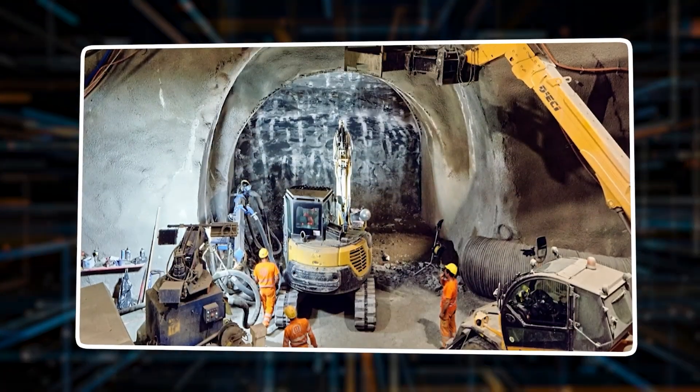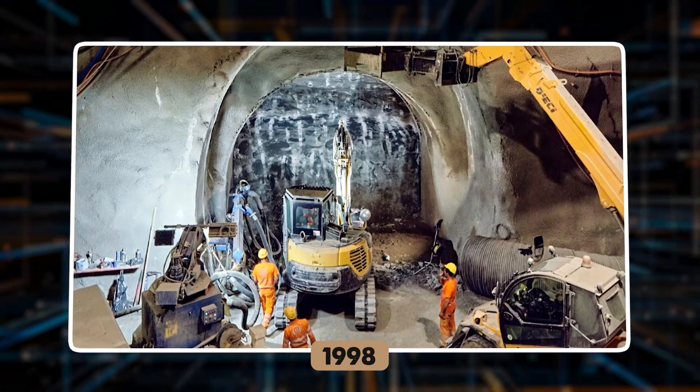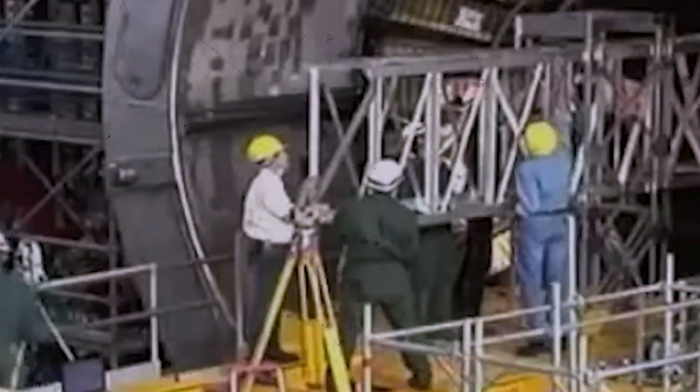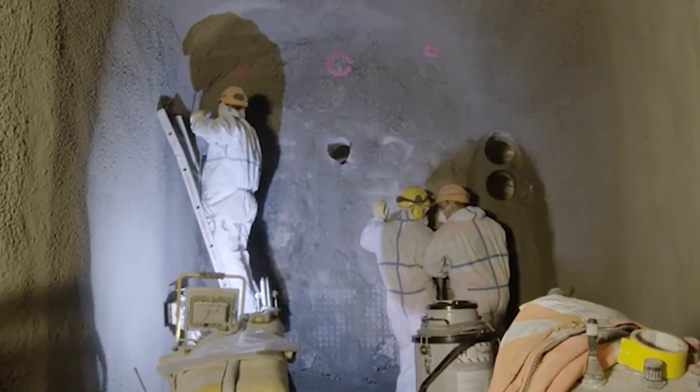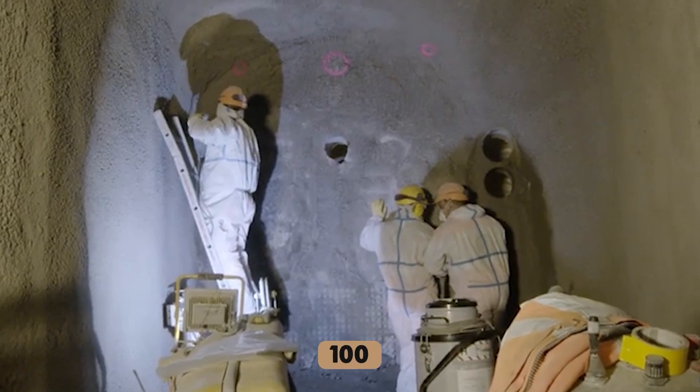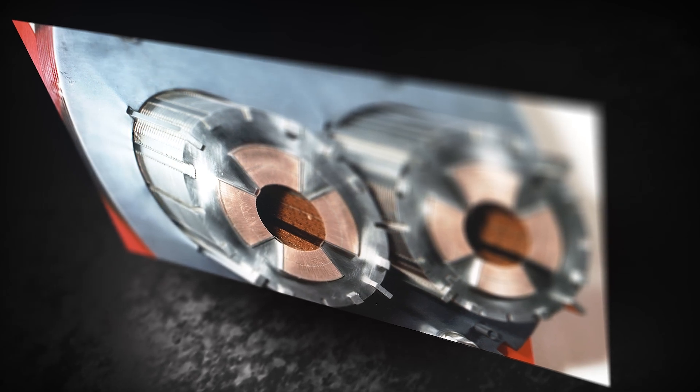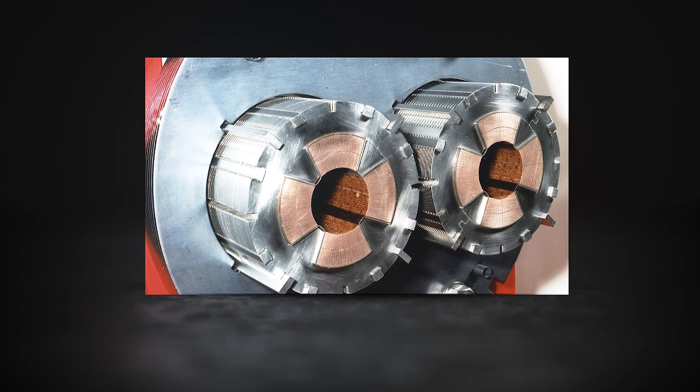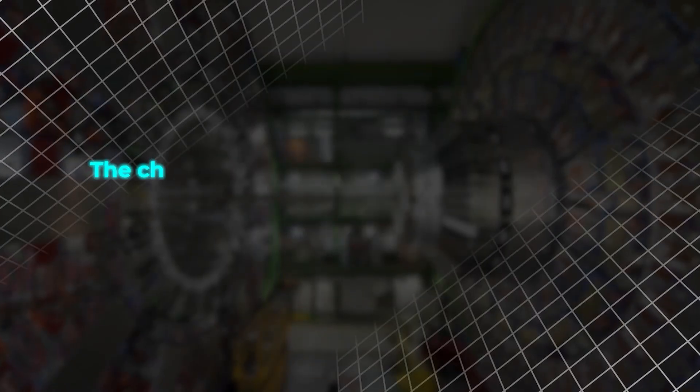Construction of the LHC began in 1998 and was a feat of both scientific and engineering innovation. The project required an extraordinary level of international collaboration, with thousands of scientists, engineers, and technicians working together across more than 100 countries. One of the LHC's most impressive aspects is its use of superconducting magnets, which operate at incredibly low temperatures, and its ability to create a vacuum that is one billionth of the pressure found at sea level.